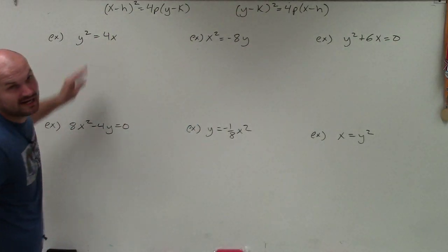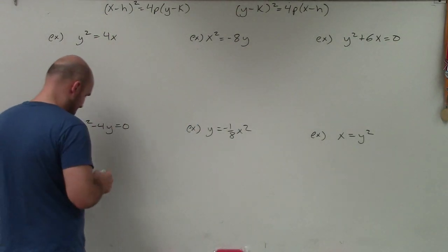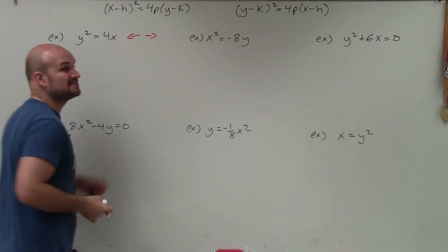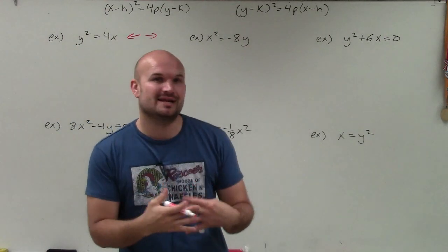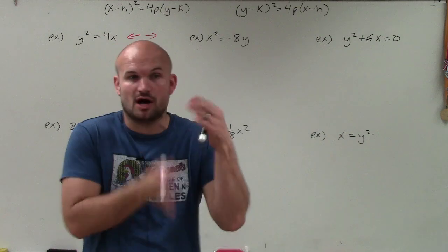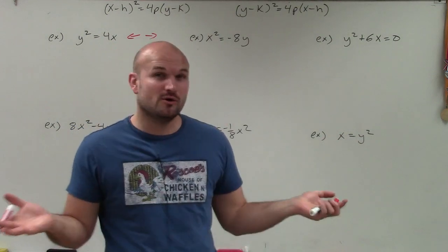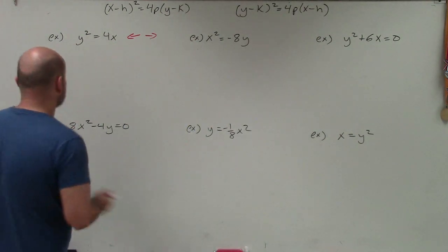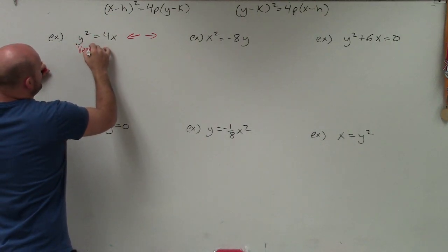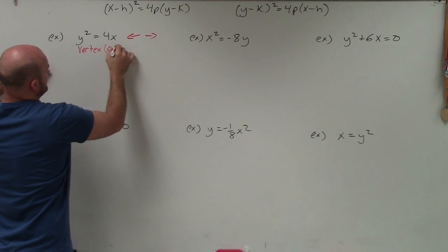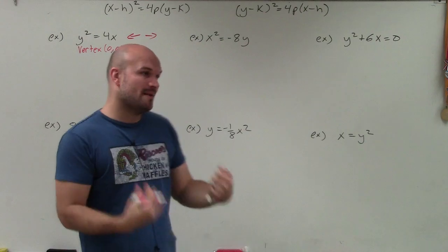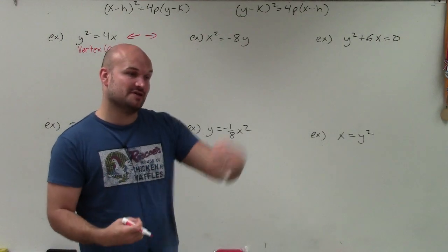Here I see that y is squared, so the graph opens left or right. I'll note that on the side. We know there's no h and k, so h and k are going to be 0. Vertex is at (0, 0). Now the next thing is I want to find the focus. Remember, p is the distance from the center to the focus.